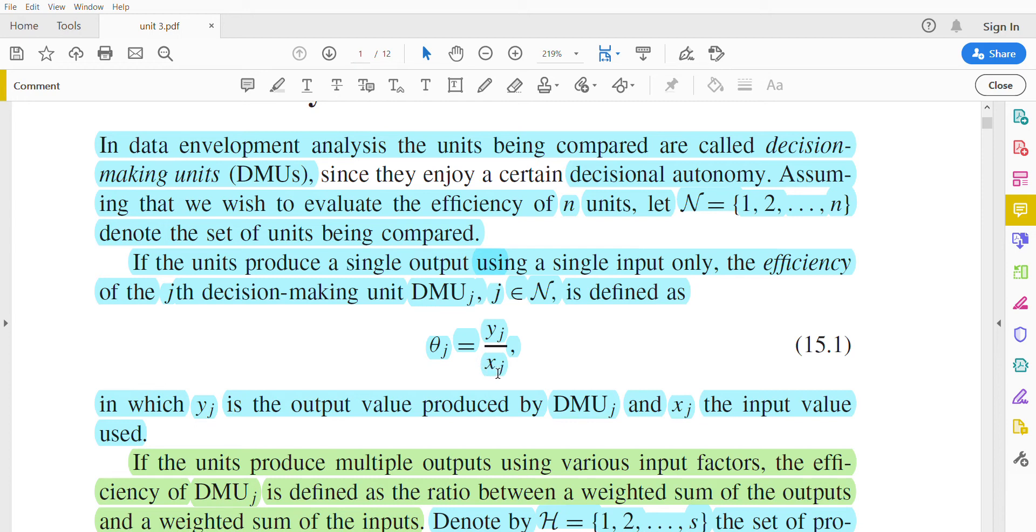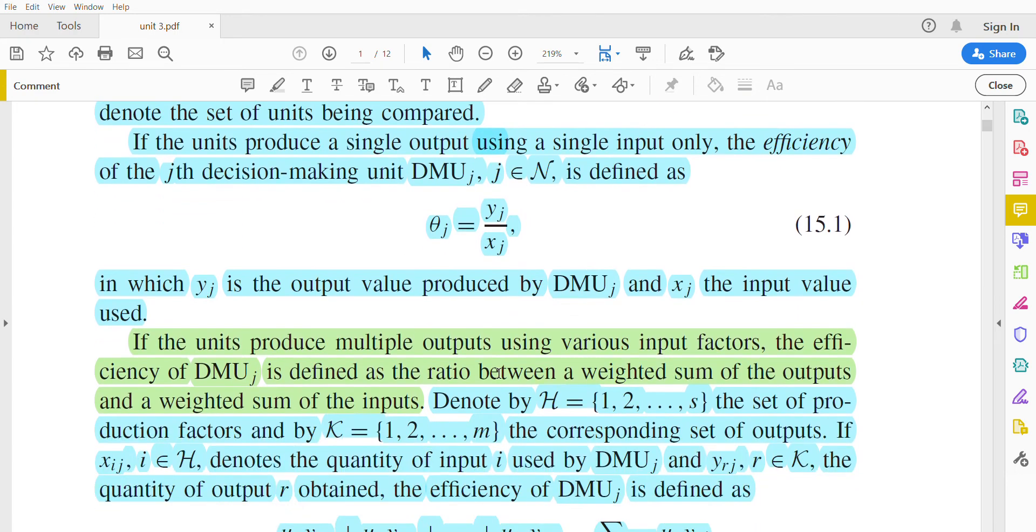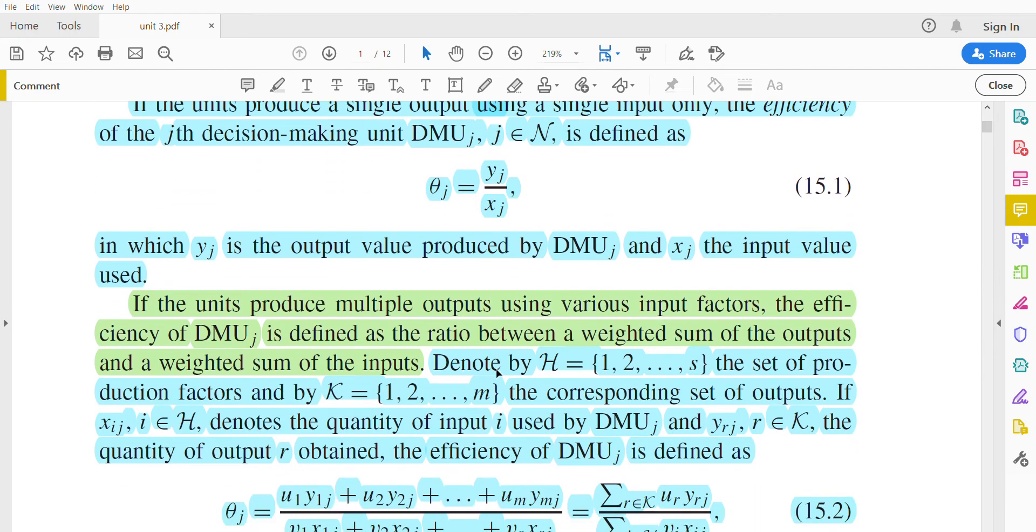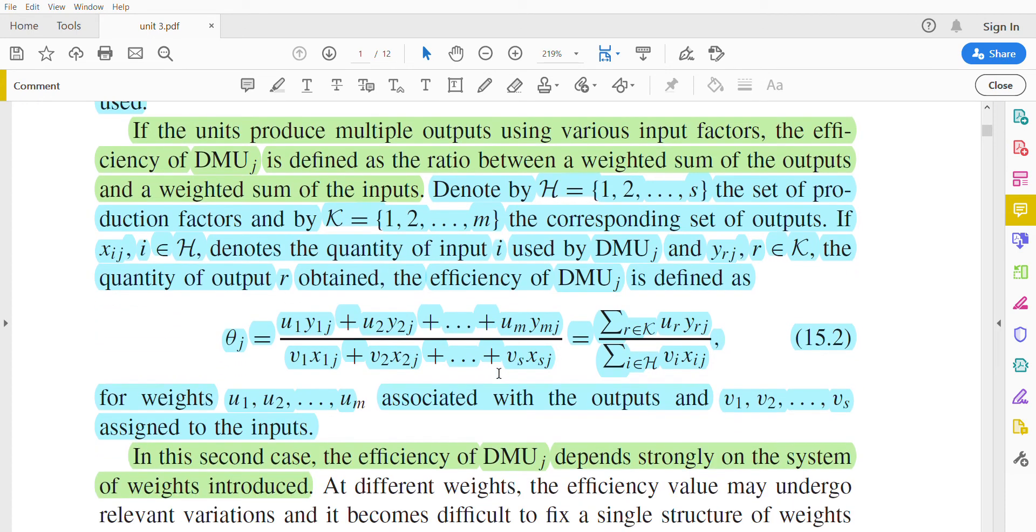So this is for single output using a single input only. If units produce multiple outputs using various input factors, then the efficiency of DMU is defined as the ratio between a weighted sum of the outputs and a weighted sum of the inputs.